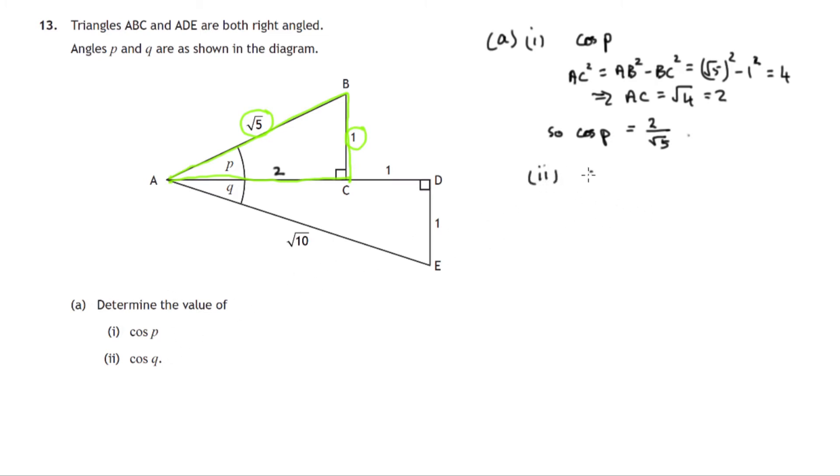Cos Q is next. Let's examine cos Q, cosine of Q. So the cosine of Q, the angle Q is in a different right angle triangle. We can see that triangle outlined here. It's A, D, E. It's a slightly different one.